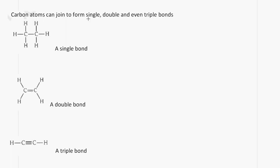Carbon atoms can also form single, double, or even triple bonds. We have a carbon to carbon single bond — one bond. We can also have a carbon to carbon double bond — two bonds between the carbon atoms. We can also form a triple bond — three bonds between the carbon atoms. What you need to remember is that carbon is able to form 4 bonds around itself.